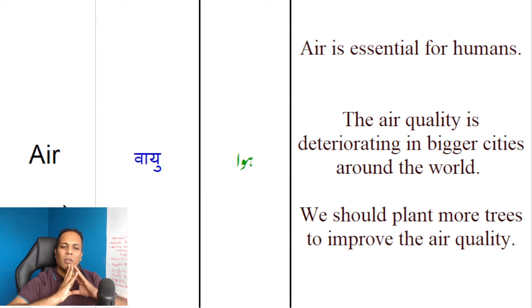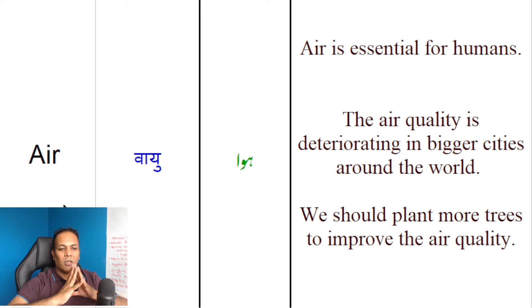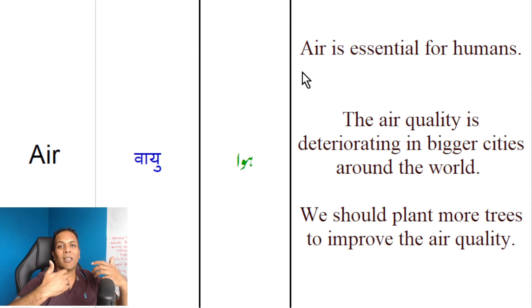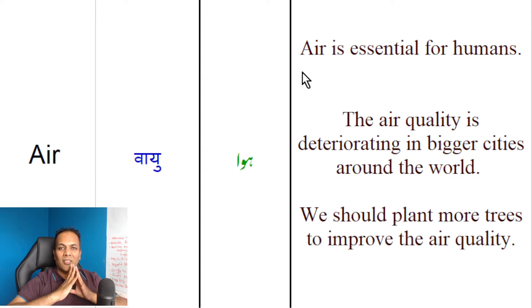Dosthoon, 'air' ka meaning hota hai — hawa. Jaise, 'Air is essential for humans.' Hawa jo hai, insaanon ke liye zaroori hai, kyunki humay saans lena hota hai. Air is essential for humans.